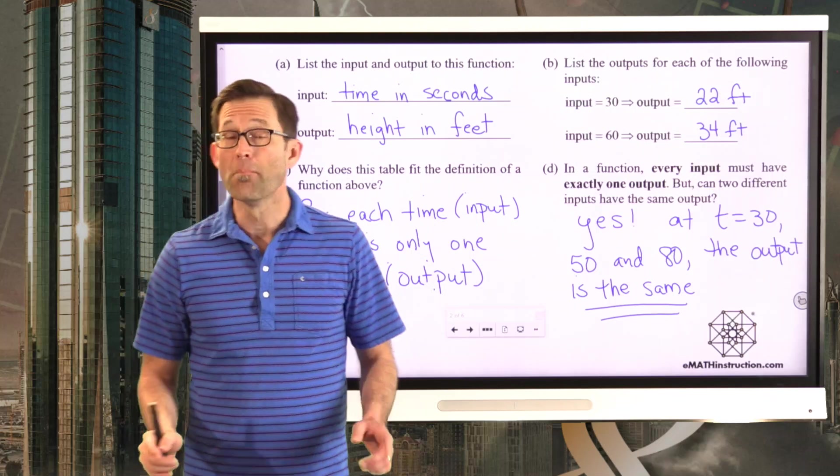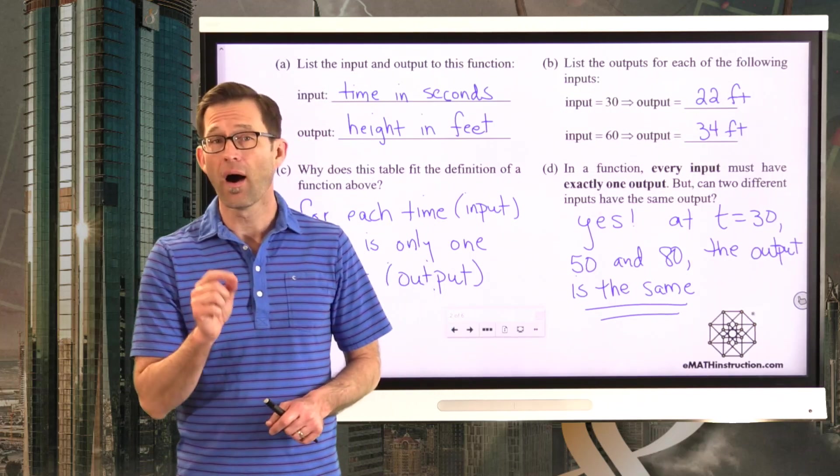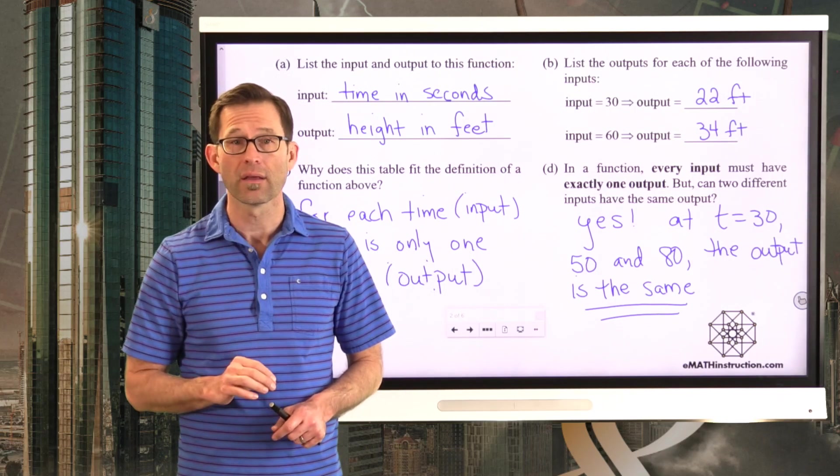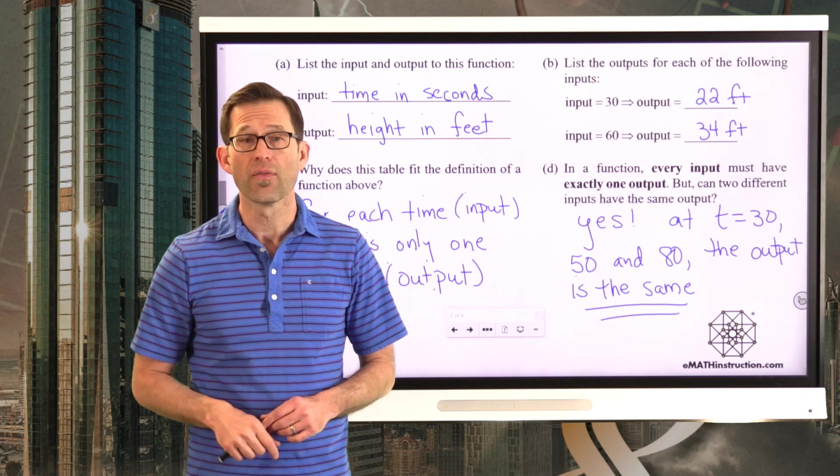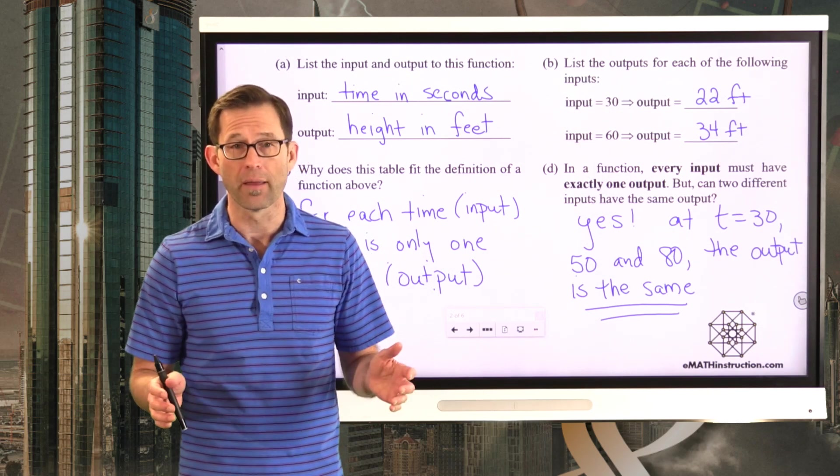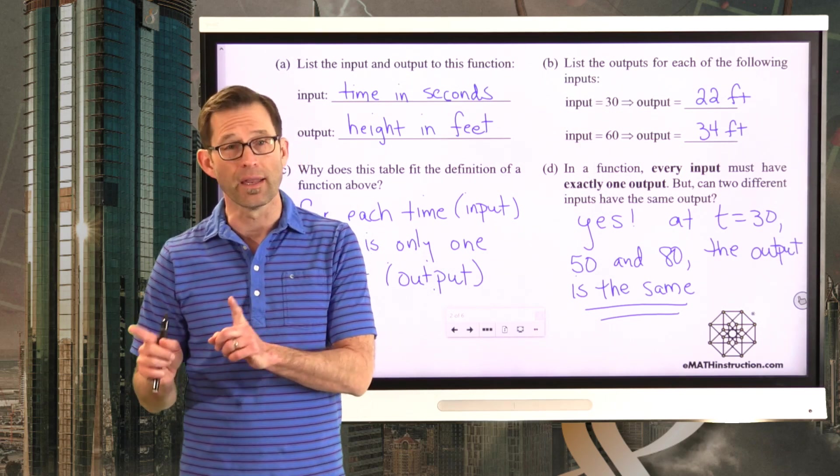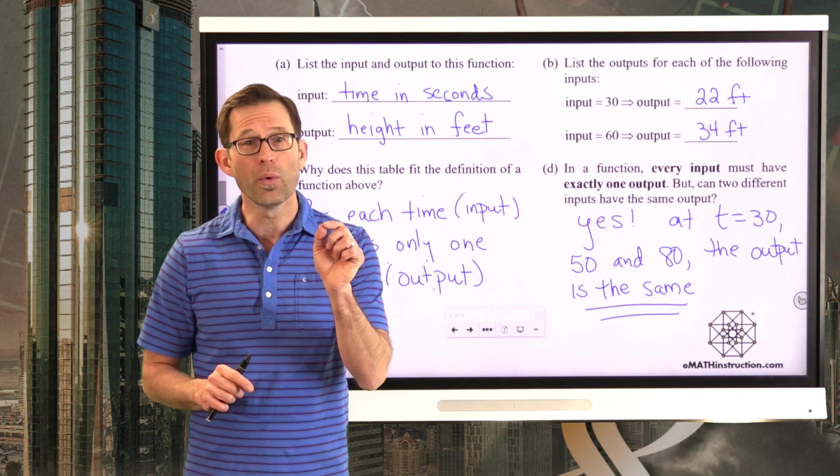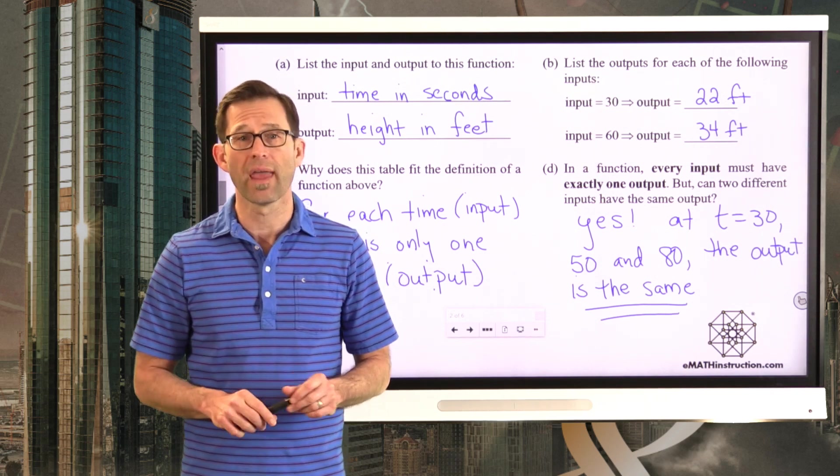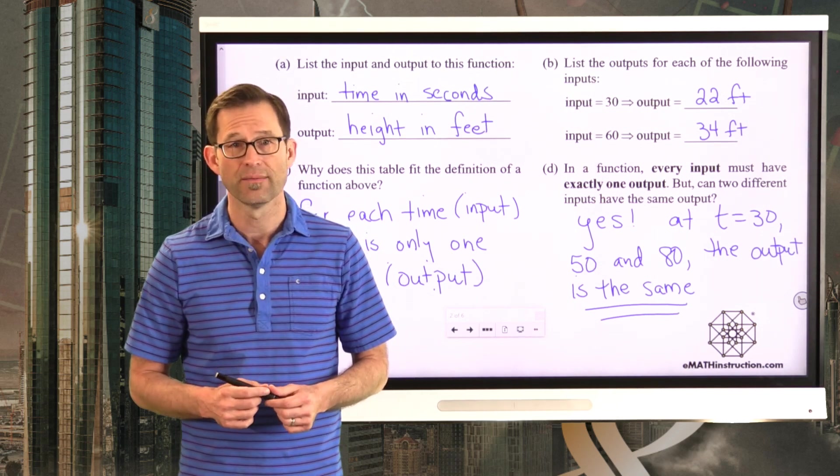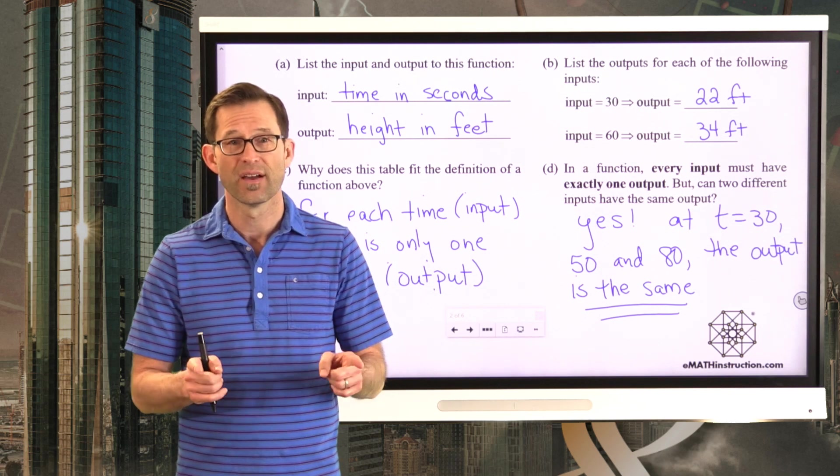And that makes sense. By the way, that means that the time is not a function of the height. So if I give you a height, there could be more than one time that the kite is at that height. But if I give you a time, the kite can only have one height that it's at. Make sense? I hope. Let's continue to work with more types of function rules.